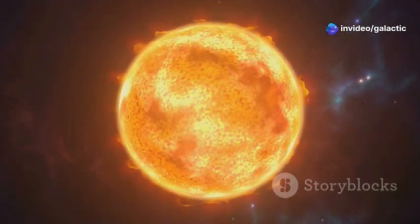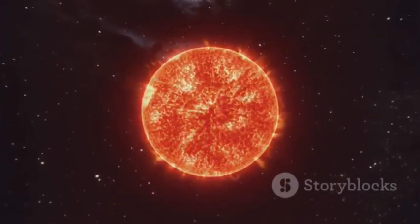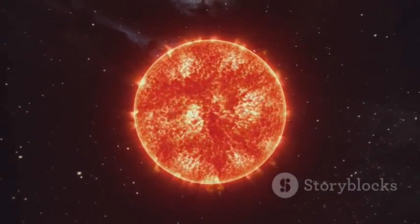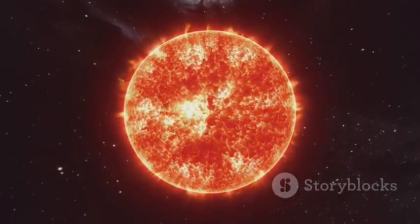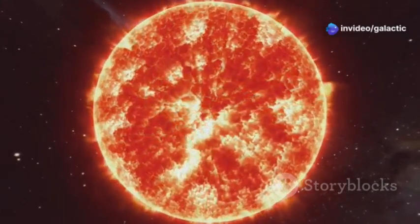As a red supergiant, Betelgeuse dwarfs our own sun in both size and luminosity. Its diameter is estimated to be hundreds of times larger than the sun's, so vast that if it were to replace our star, its outer layers would extend beyond the orbit of Mars.